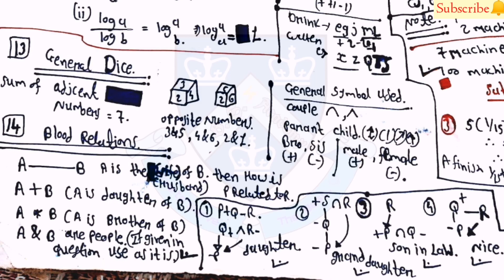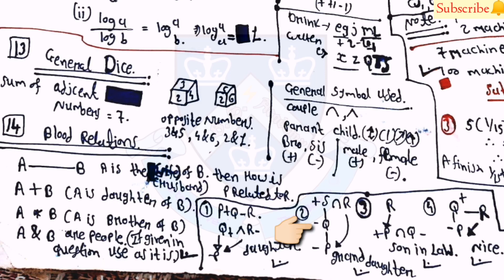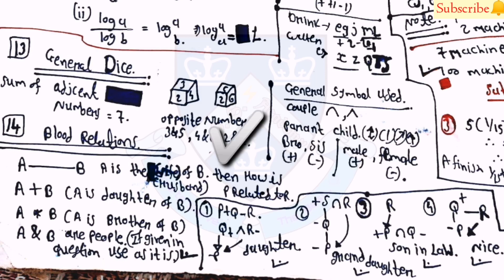For blood relation problems, use standard symbols: a double-line symbol for a couple, arrows or lines for parent-child relationships, a plus symbol for brother, and a minus symbol for sister. For male use positive and for female use negative — the exact symbol doesn't matter as long as you can remember it. For example, if P is the daughter of R or the granddaughter of R, just use the notation to solve it quickly. Using symbols is faster than applying plain logic for blood relation questions.